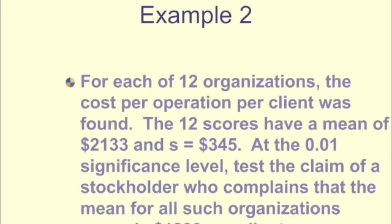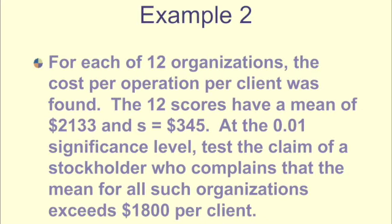For this second example, for each of 12 organizations, the cost per operation per client was found. 12 scores, so our sample size, have a mean of $2,133 and a standard deviation of $345. At the 0.01 significance level, we want to test the claim of a stockholder who complains that the mean for all such organizations exceeds $1,800 per client.